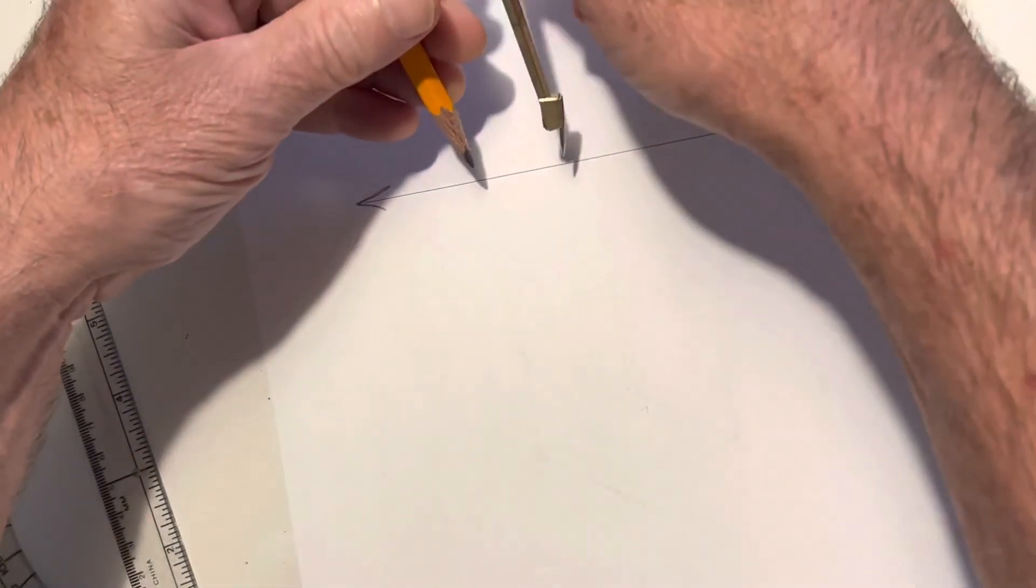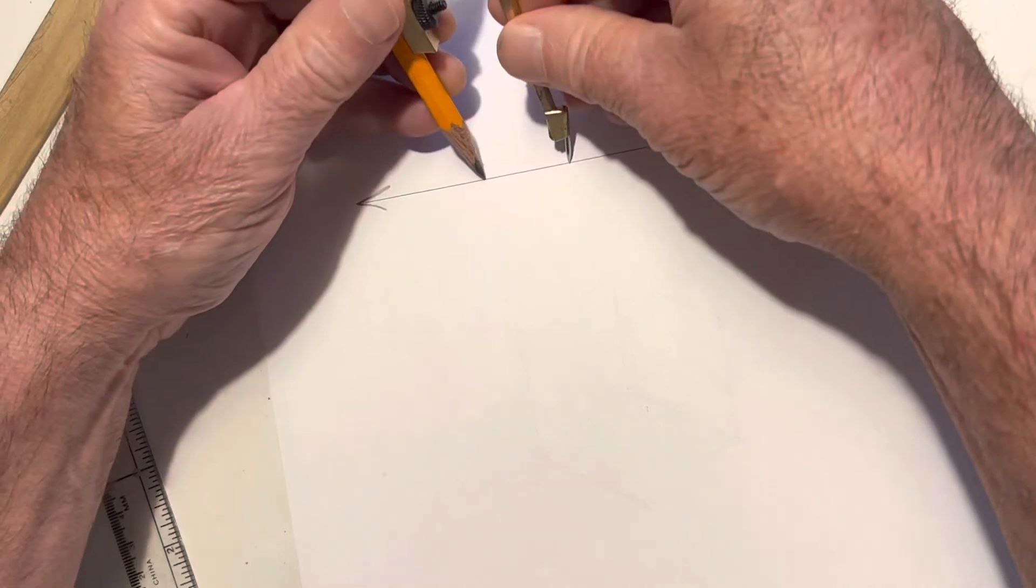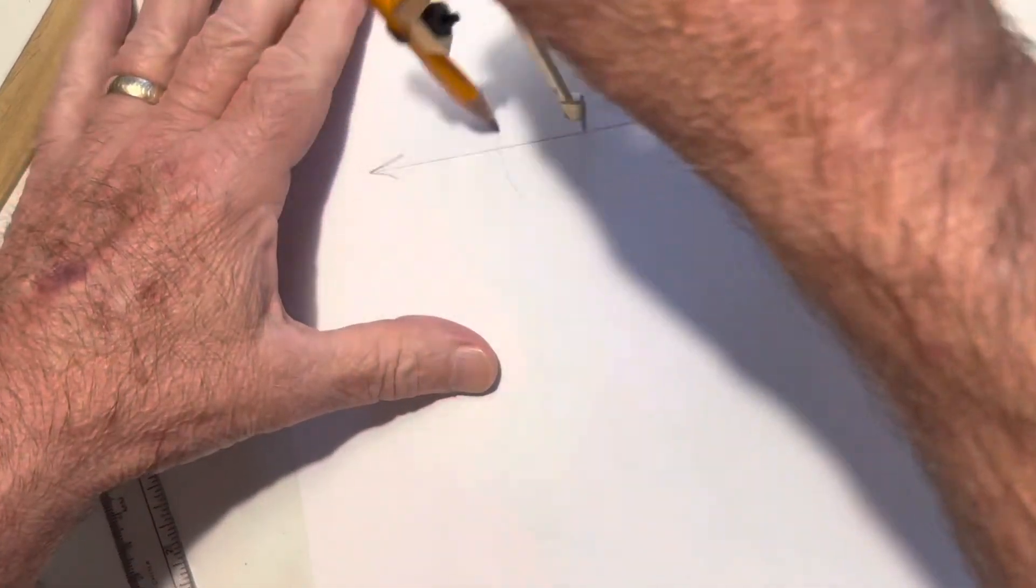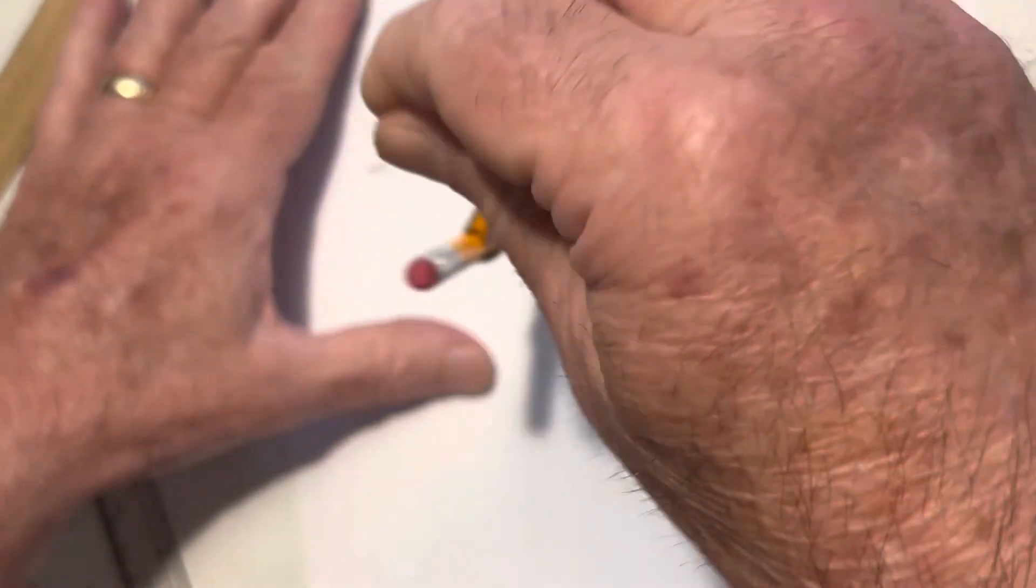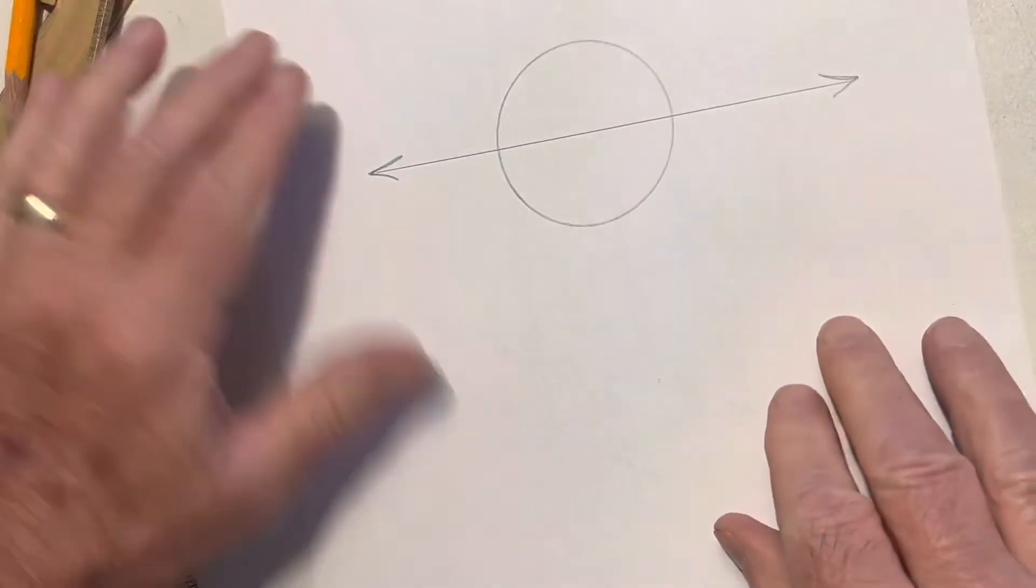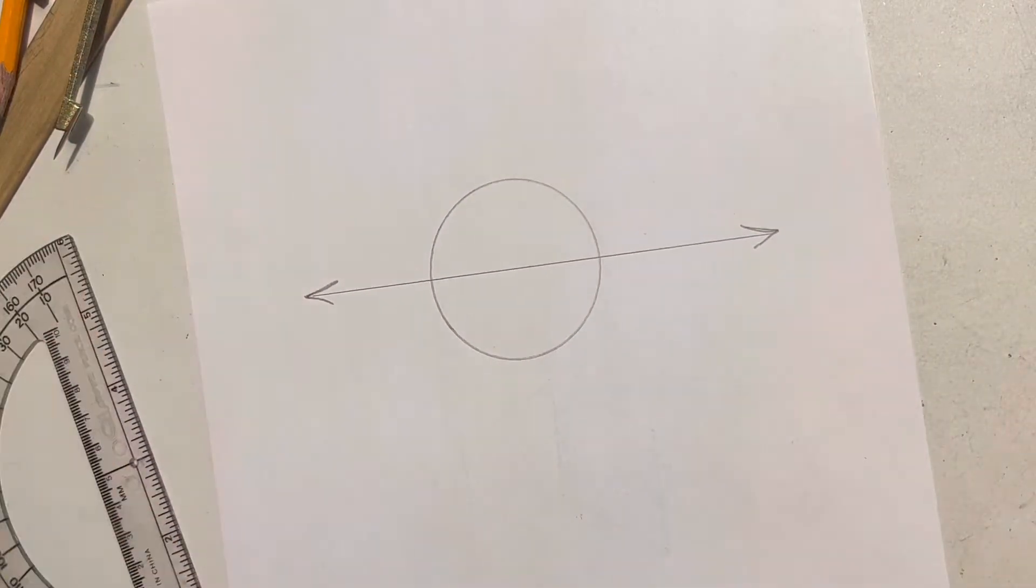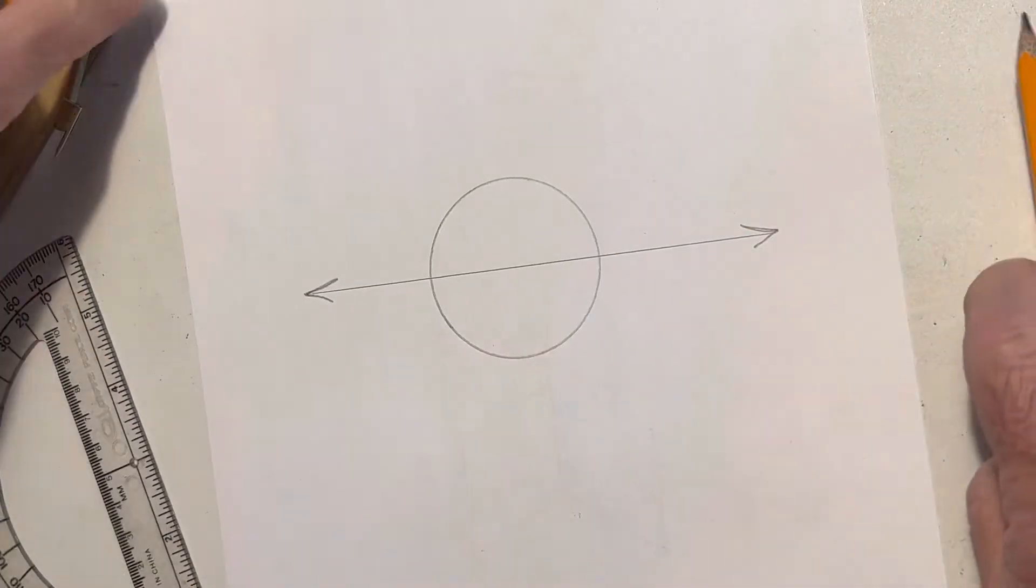With our compass, take this spot there, turn the circle. I usually go backwards and forwards. Now I've got my circle here.